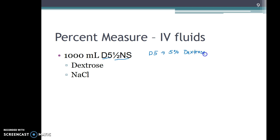Dextrose is a sugar and so 5% would be 5 over 100 and we're setting that equal to an unknown amount of sugar in the full 1000.